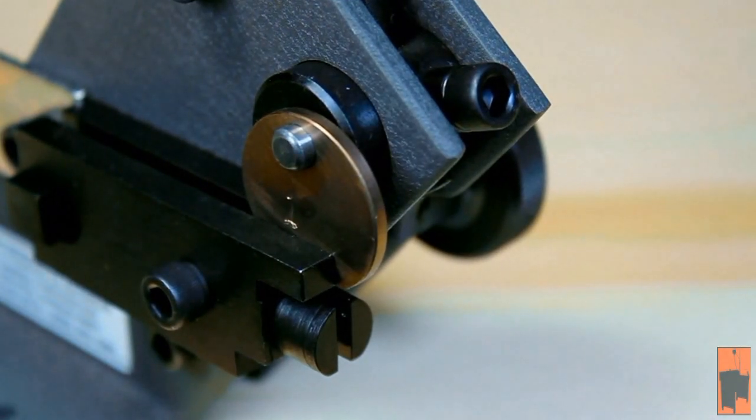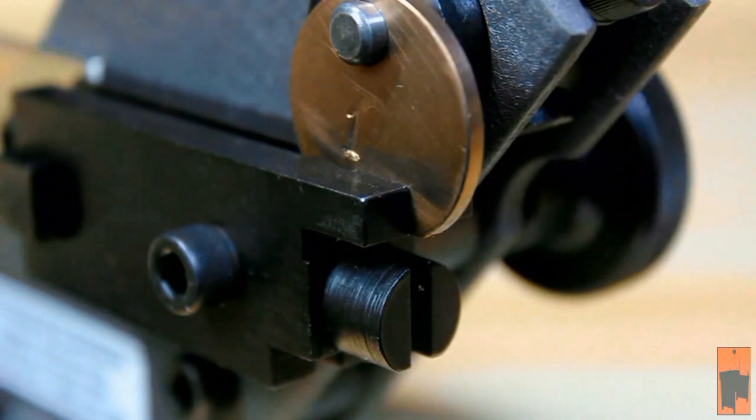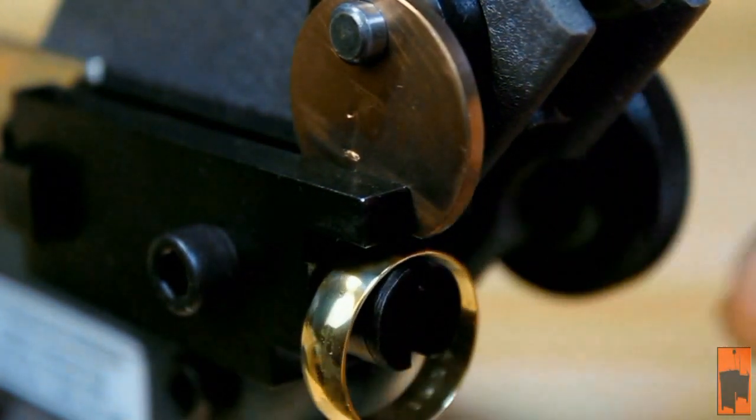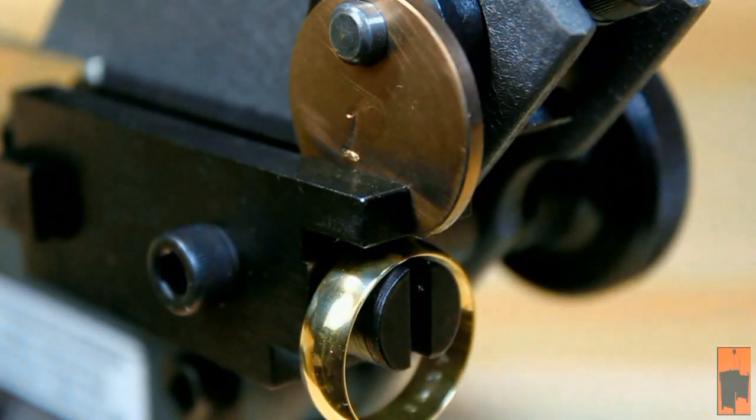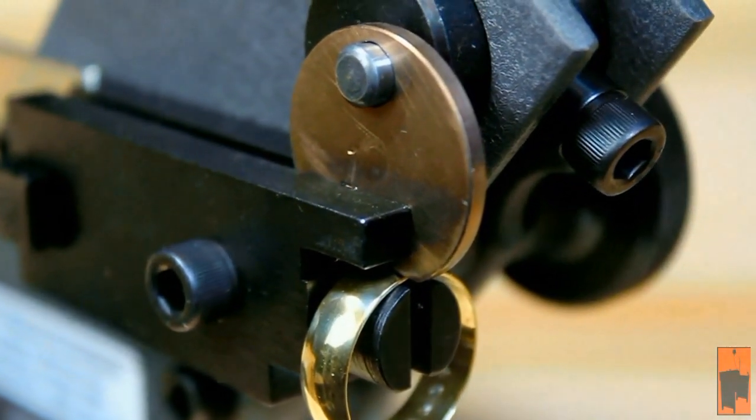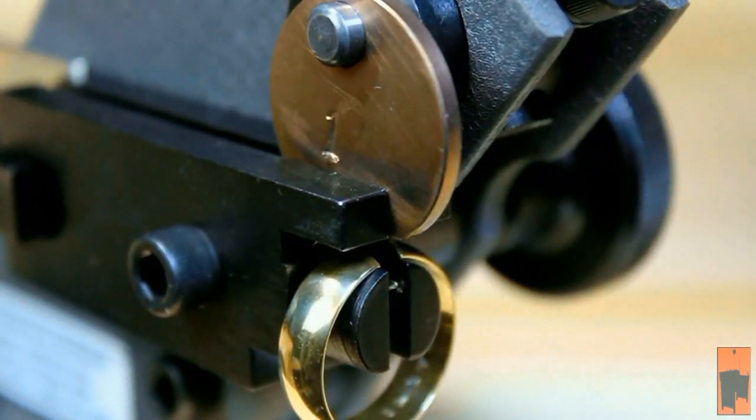Enough talking, let's see this do its thing. Place your ring on the mandrel right under the blade, got your blade in place, slowly pull down on the handle, and there it goes. The ring is now one size smaller.